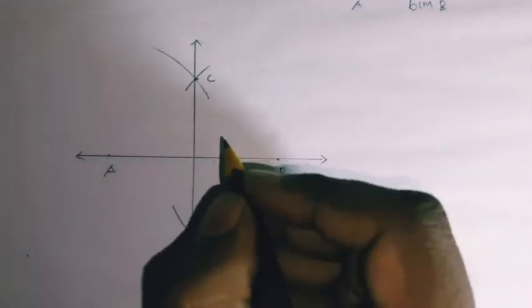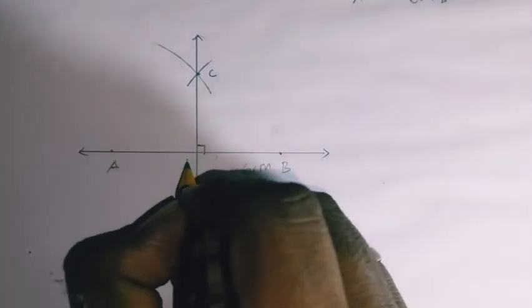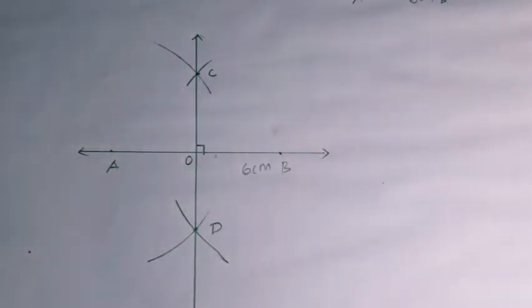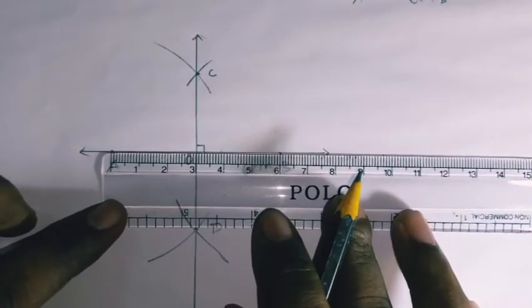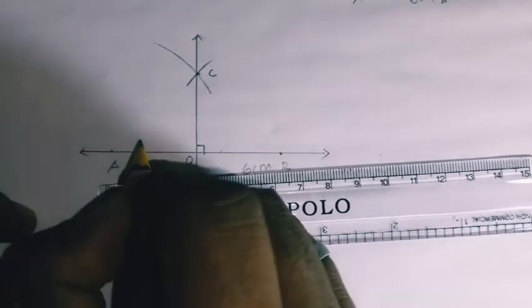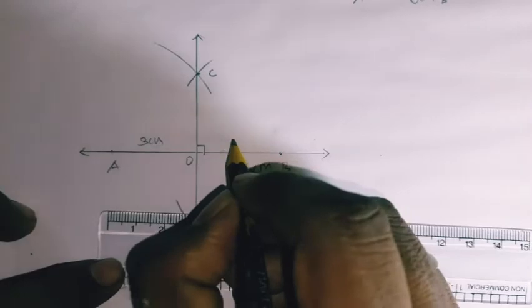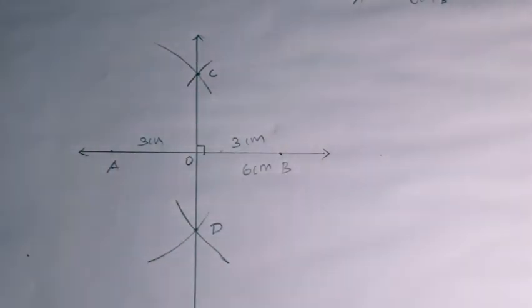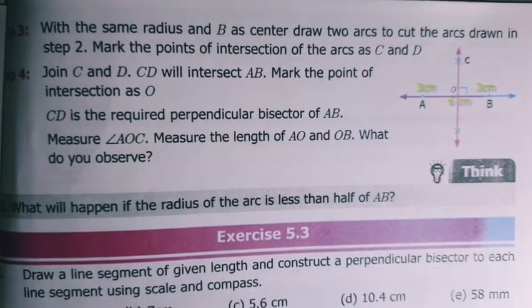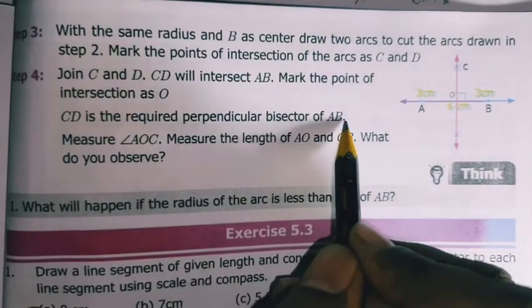The perpendicular symbol indicates 90 degrees. Mark the center point as O. Now measure: since the line is 6 cm and O is the center, AO is 3 cm and OB is 3 cm. This is the construction and the bisector of AB.